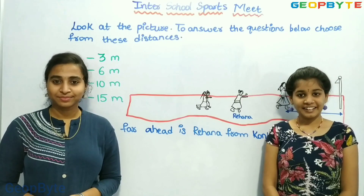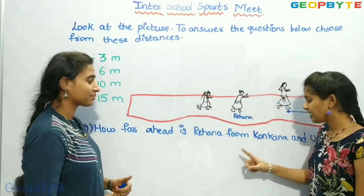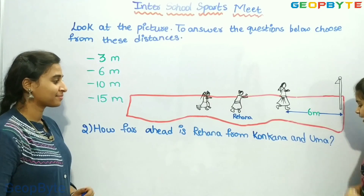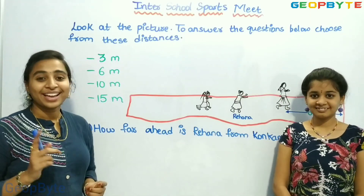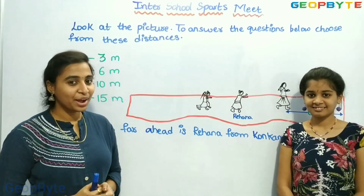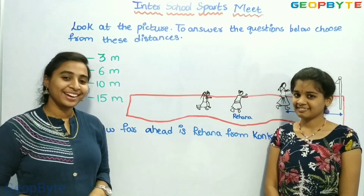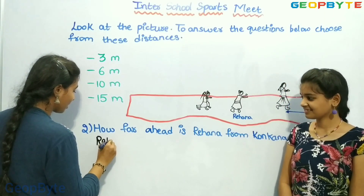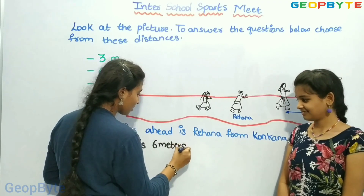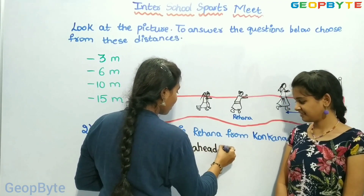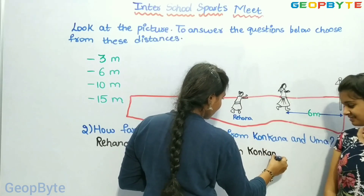Now let us see the second question: How far ahead is Rehana from Kunkana and Uma? If we observe the picture, Rehana is 6 metres ahead of Kunkana and Uma. In the options we also have 6 metres. Rehana is 6 metres ahead of Kunkana and Uma.